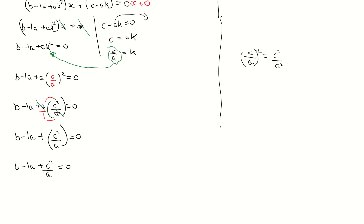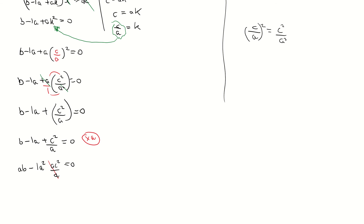I want to get rid of that fraction, so I'm going to multiply across by a. a multiplied by b gives ab; a multiplied by minus a gives minus a squared; and a multiplied by c squared over a — those a's cancel — gives c squared. That all equals 0. So I have ab minus a squared plus c squared equals 0.